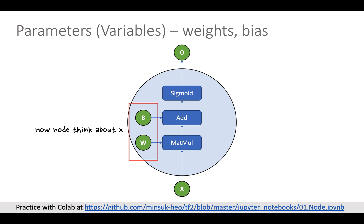Normally when we say parameter or variable it means weight and bias in a node. Intuitively you can think the variable or parameter as how the node thinks about the input X.